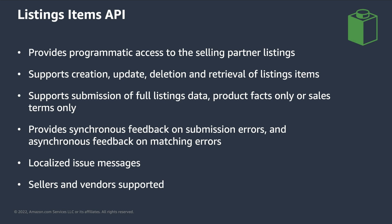Additionally, you can decide to send a full payload with all the product's data, or do partial updates by submitting only the attributes that you want to change. With the Listings Items API, the feedback mechanisms have improved. It provides information about submission errors synchronously — for example, if a mandatory attribute is missing, you get notified by the API response. Issues happening at the matching stage are provided asynchronously, using mechanisms like notifications. This helps implement efficient workflows that react to feedback as soon as it's available.